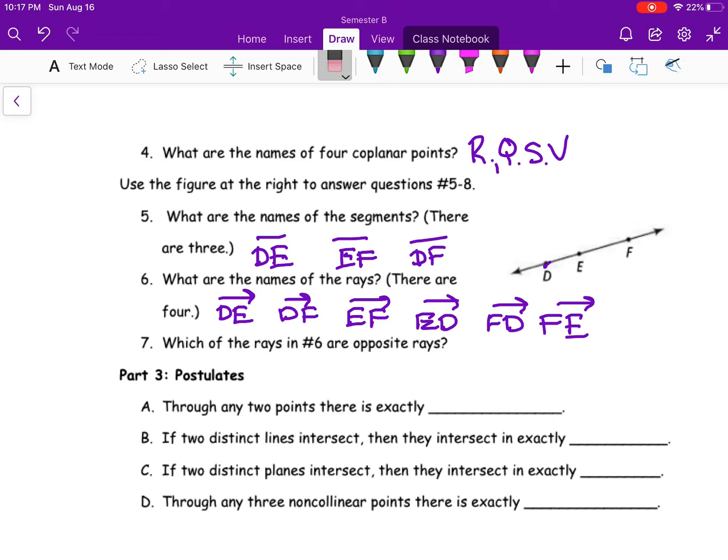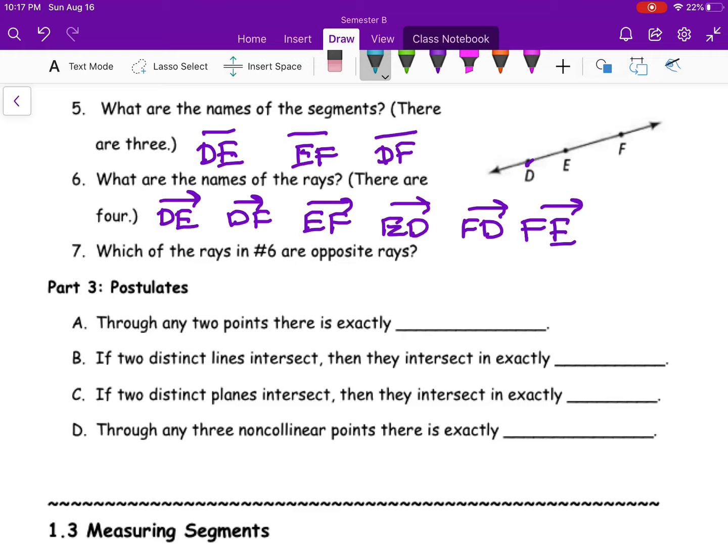Okay. And then our postulates. So these you just need to kind of think through and have memorized. Through any two points, there is exactly. You just want to kind of have to memorize these. There is exactly one line.